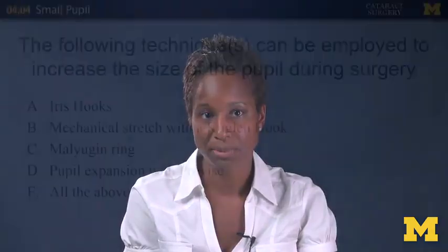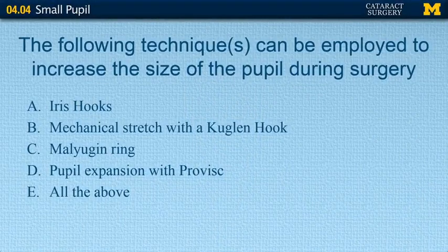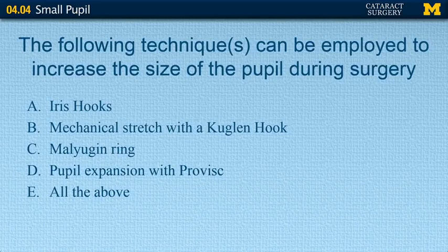Moving on to intraoperative pupil expansion techniques. Question: the following technique can be employed to increase the size of the pupil during surgery. A, iris hooks; B, mechanical stretch with a Kuglin hook; C, Malyugin ring; D, pupil expansion with Provisc; and E, all of the above.